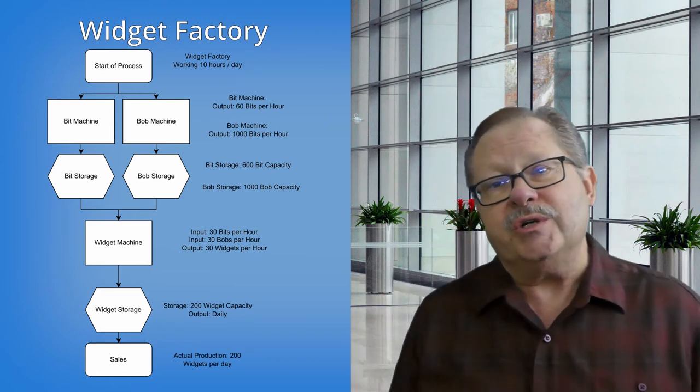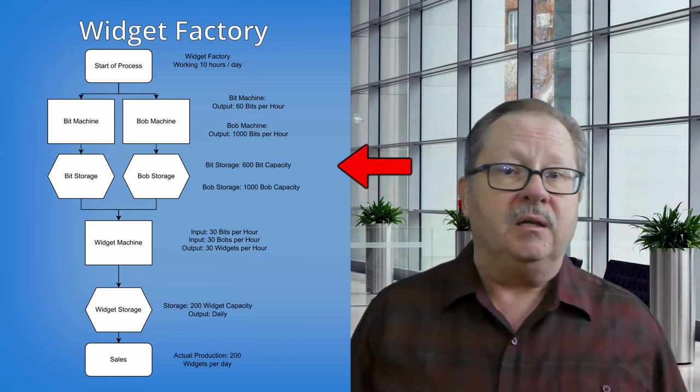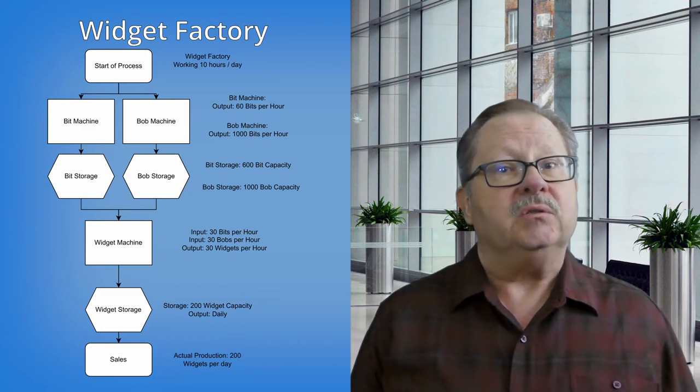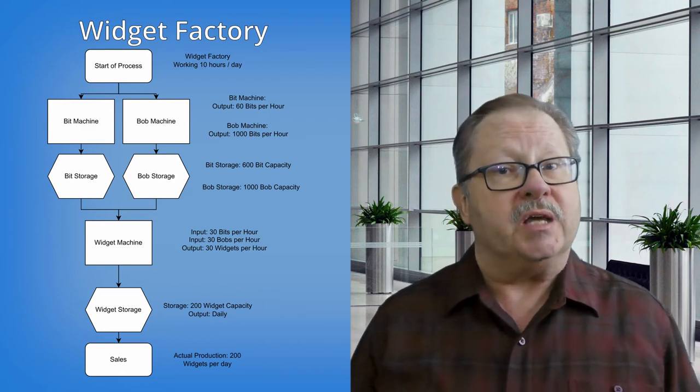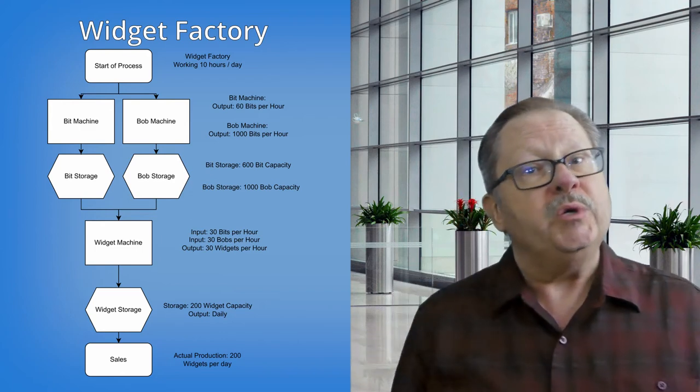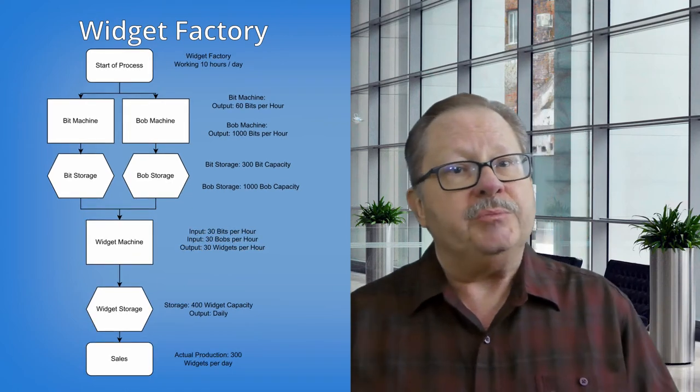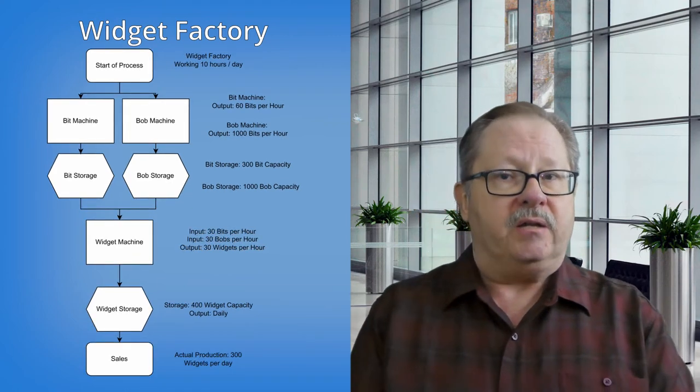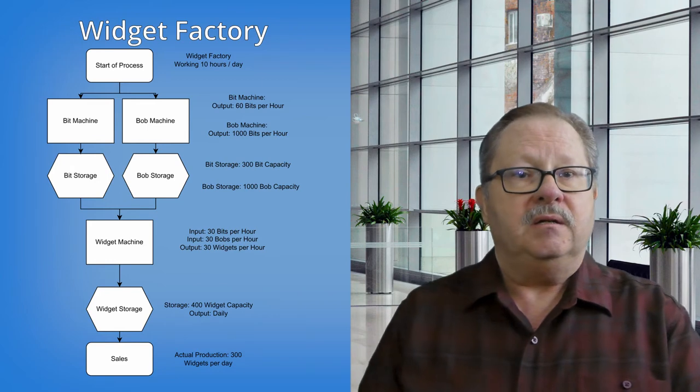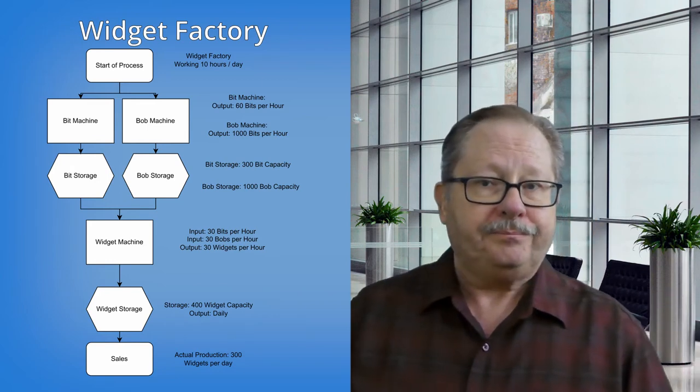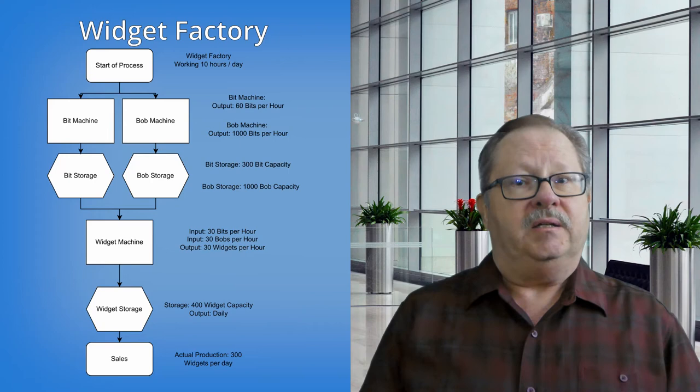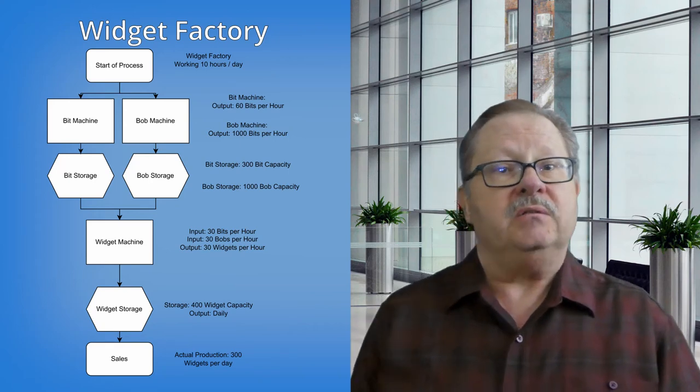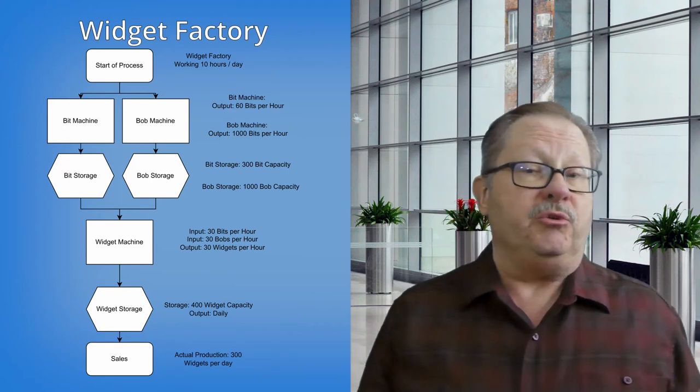We can shift some of the storage space from the bit machine, which used to need a lot of space while the widget machine was out of service, to the widget machine. Now the widget machine can work all day without running out of storage space. Now let's look at our output: 300 widgets per day. Excellent. That's what we originally thought we could produce. But can we do better?